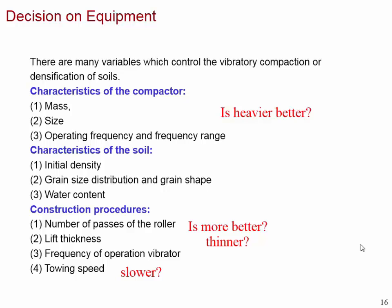Towing speed — moving slowly increases project duration and therefore cost. Lift thickness: thinner is always better because you get homogeneous compaction throughout the layer. If the lift is too thick, the bottom may not be well compacted while the top is over-compacted, causing a difference in dry density within the layer.